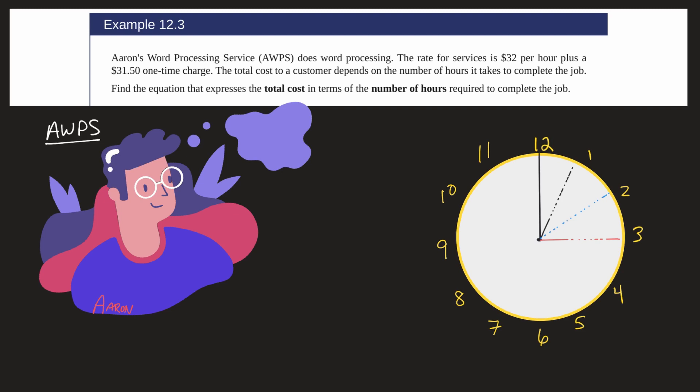Aaron's word processing service, AWPS - this is Aaron over here on the left, by the way - does word processing. The rate for services is $32 per hour plus a $31.50 one-time charge. The total cost to a customer depends on the number of hours it takes to complete the job. Find the equation that expresses the total cost in terms of the number of hours required to complete the job.